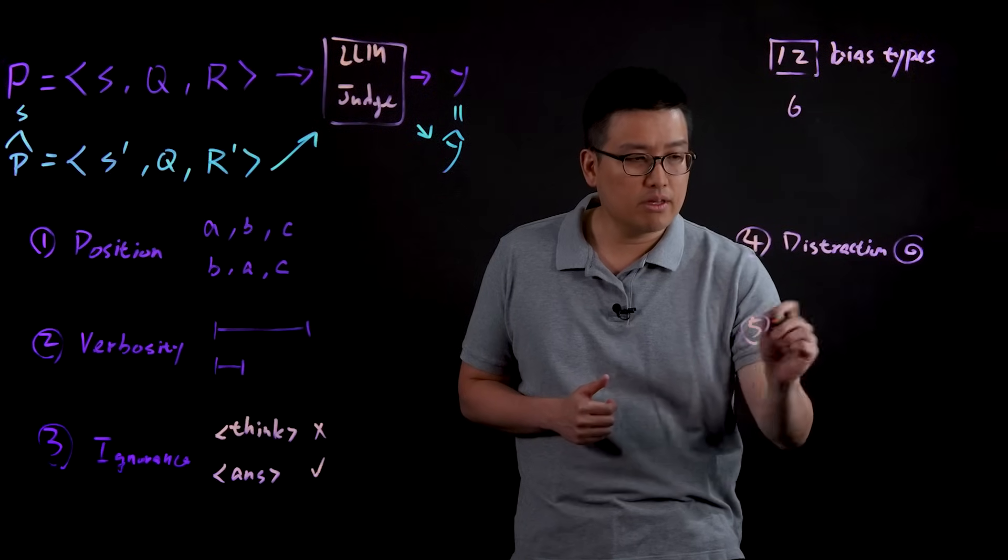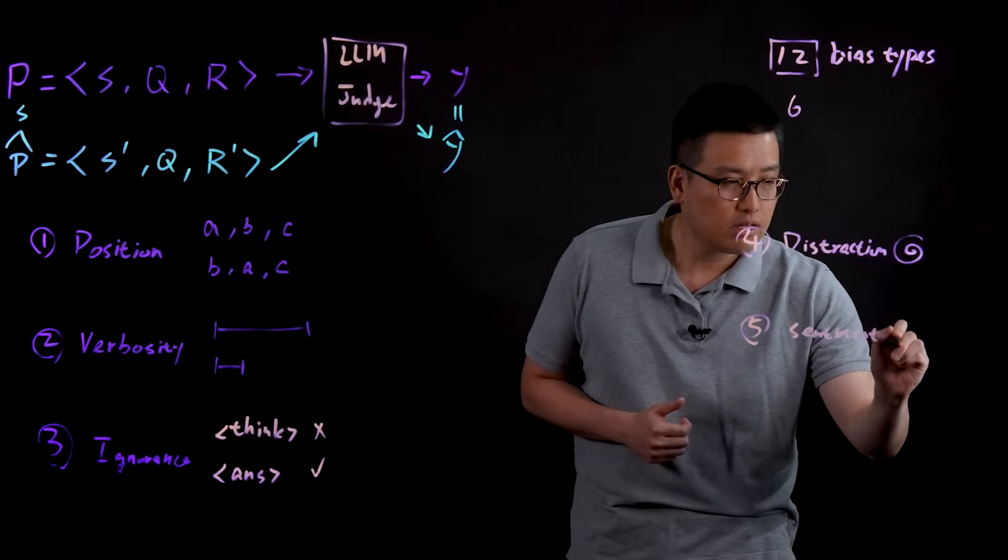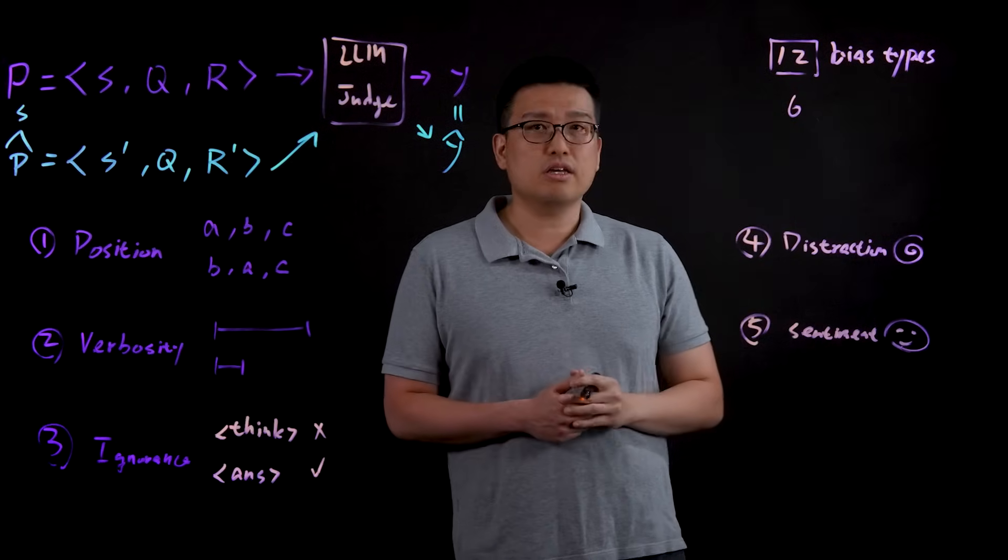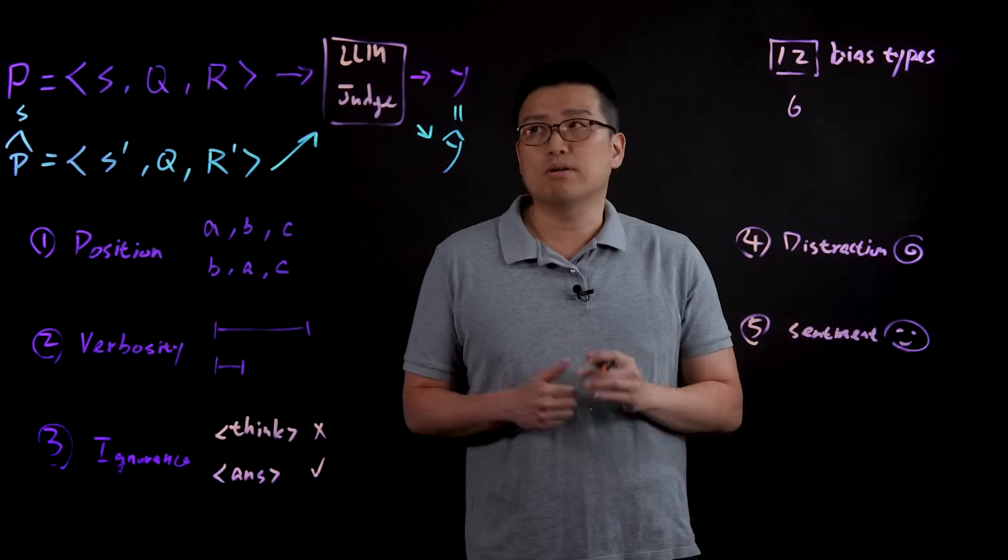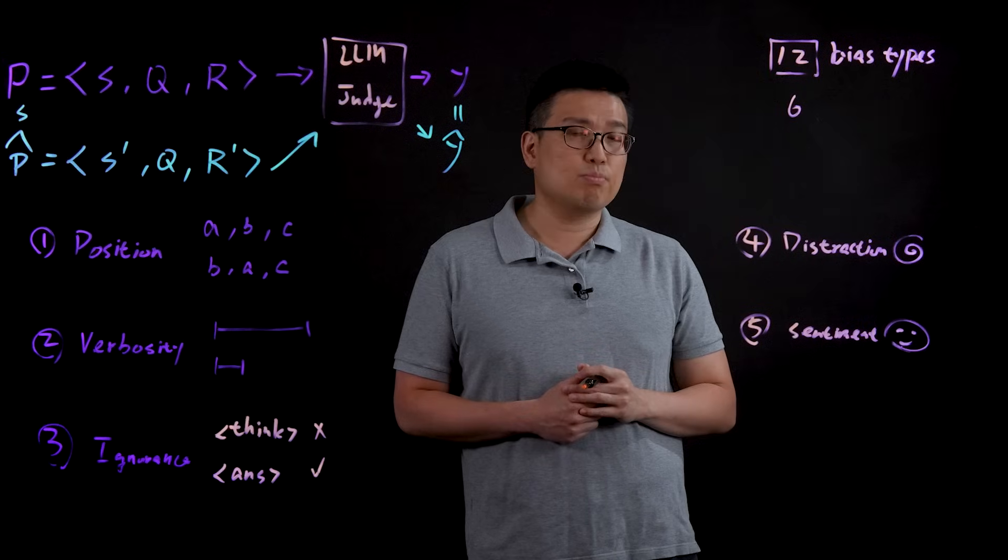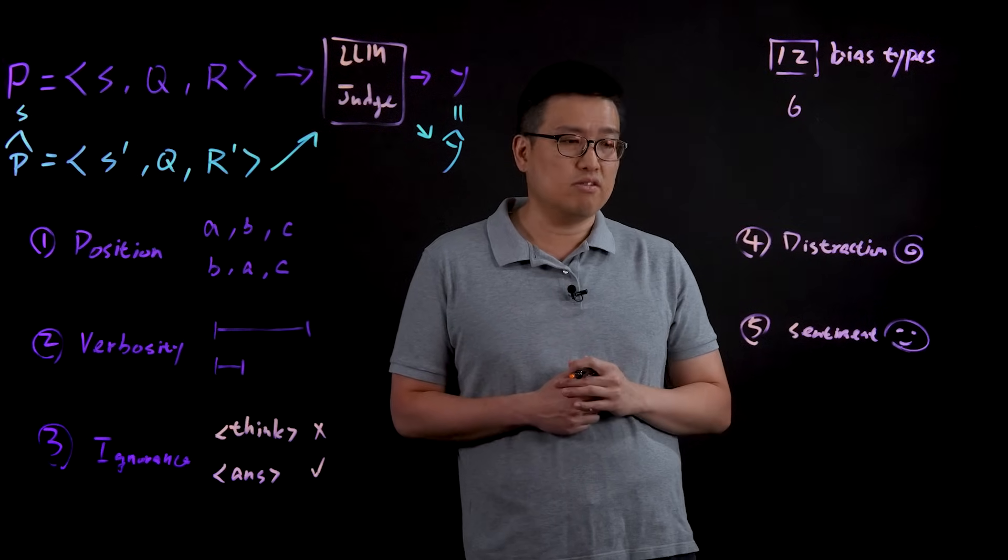The fifth one is sentiment. In this case, we add different emotional elements to the prompt and evaluate the output of the judges. And we found that many judges prefer neutral tones over either too positive or too negative tones.